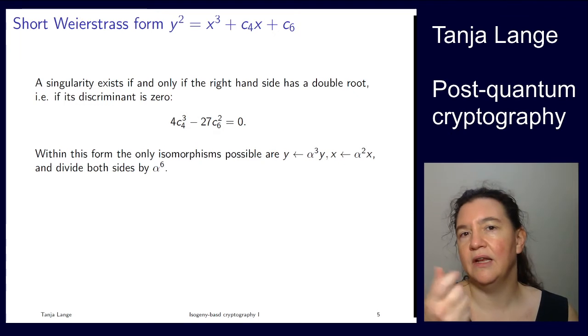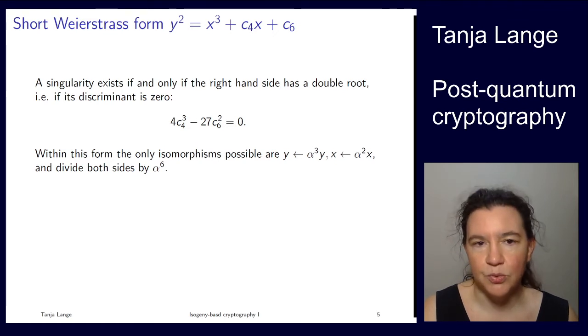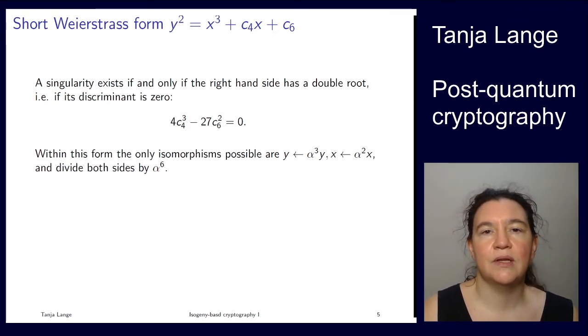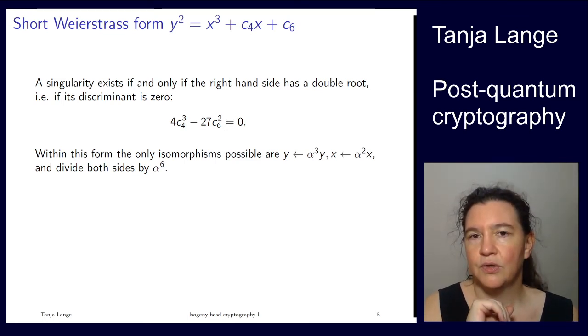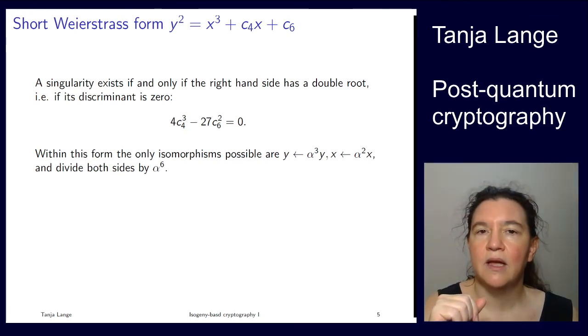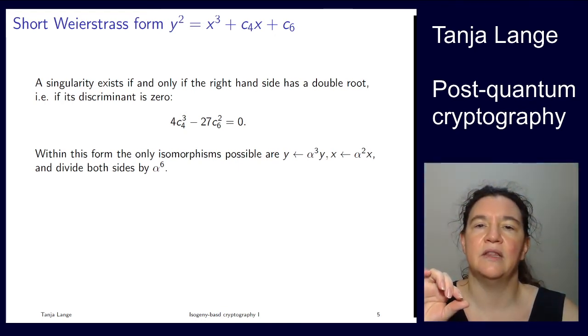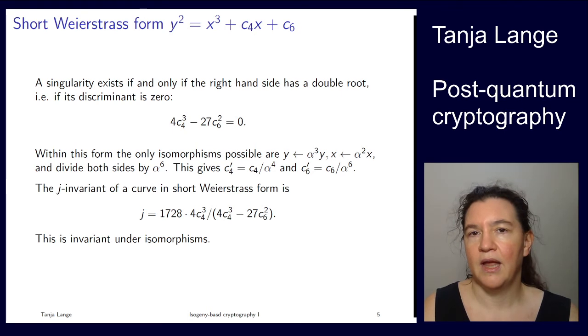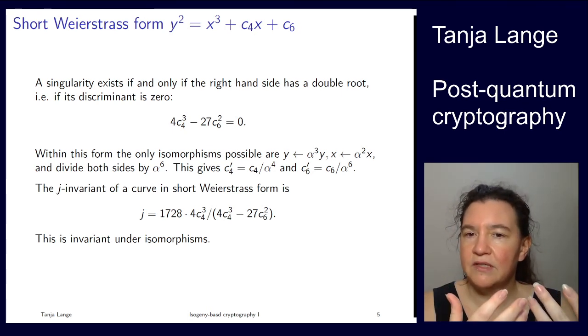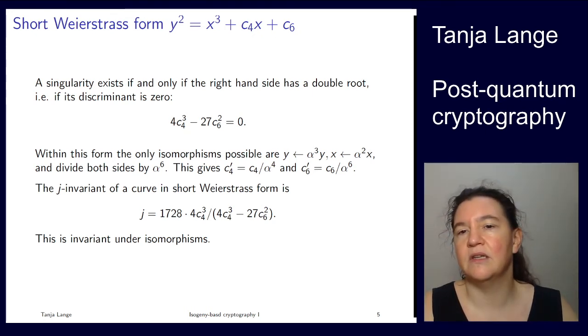If you want to stick with this form, I cannot do any linear transformations anymore. The only thing I can do is scaling the x and y with these alpha cubed and alpha squared terms. When I do this, it doesn't affect those terms but changes what c4 and c6 are. The c4 has an extra x and x gets changed to alpha squared x, then I divide by alpha to the 6. The new c4 prime is the old c4 divided by alpha to the 4. The c6 term doesn't have any x to begin with, so c6 prime is c6 divided by alpha to the 6.